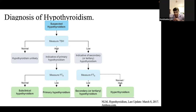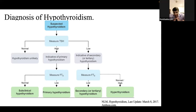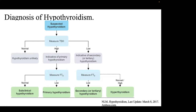Regarding Pendred syndrome: it causes goiter and is due to absence of the pendrin channel, causing salt imbalances and deranged iodine uptake and metabolism. There are problems with organification of iodine.